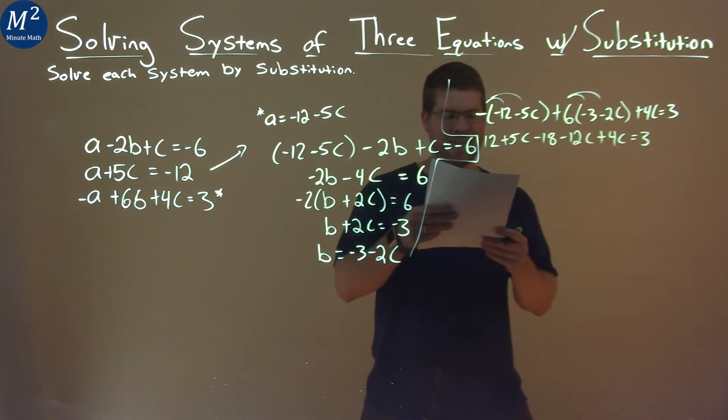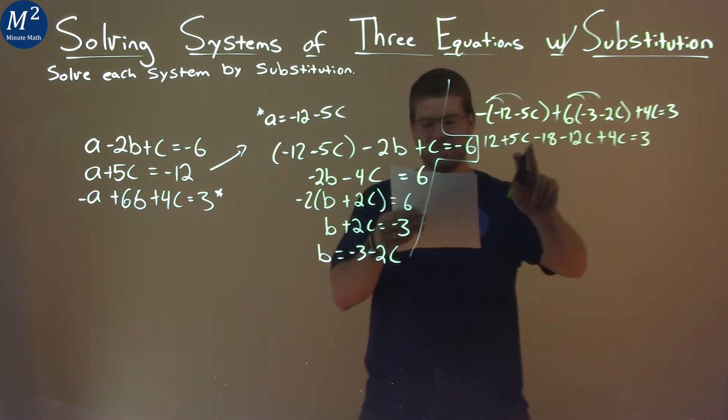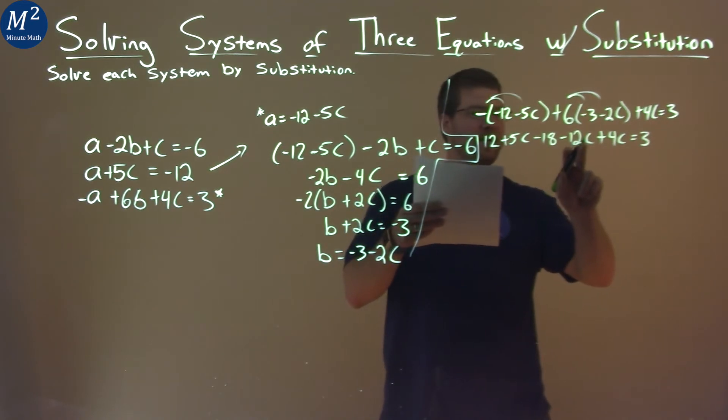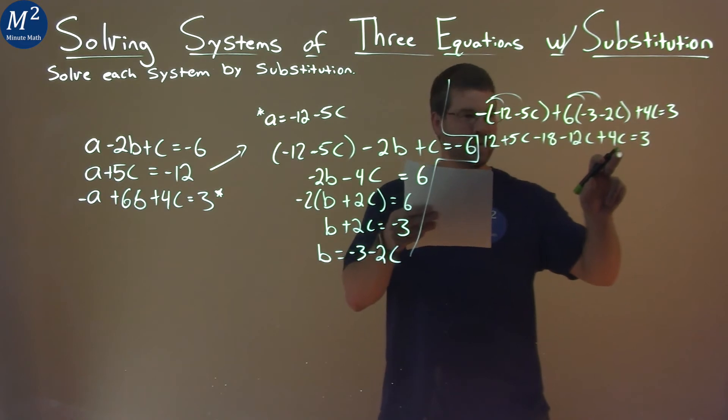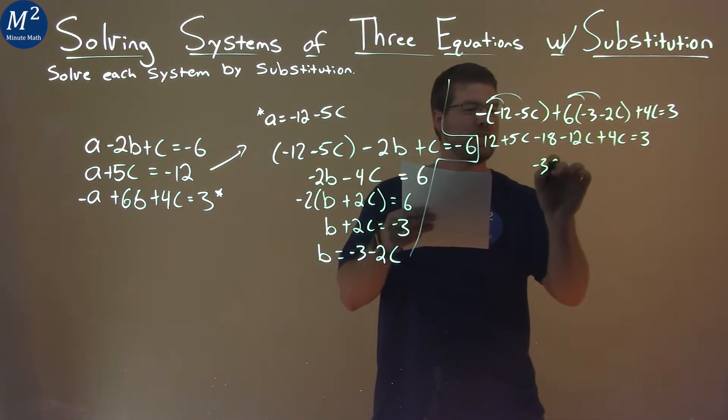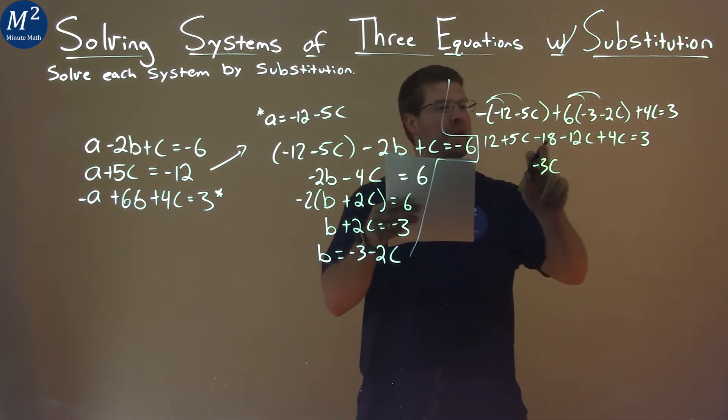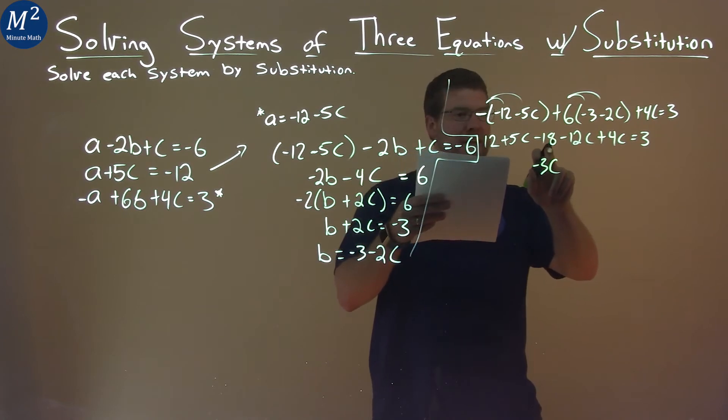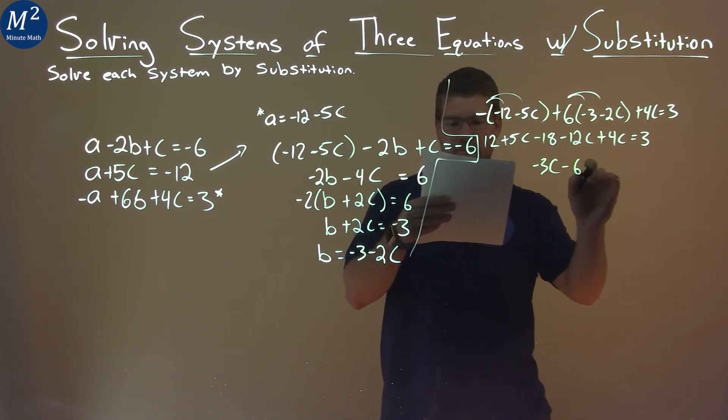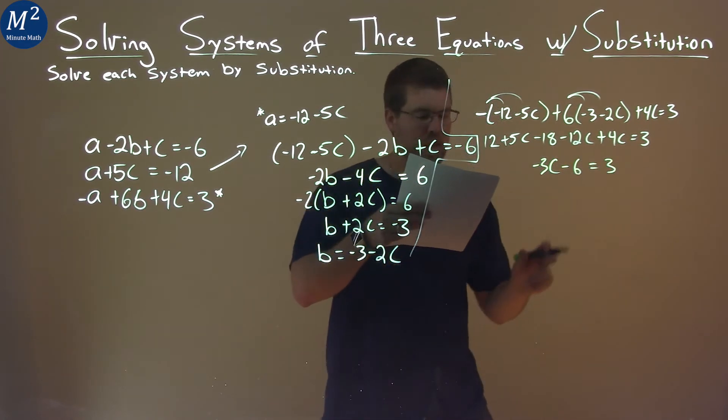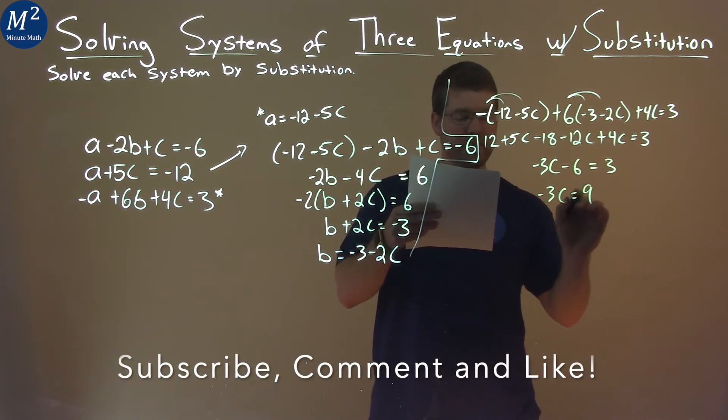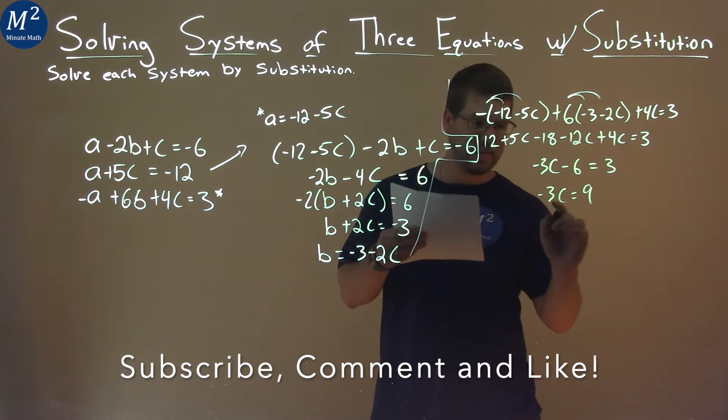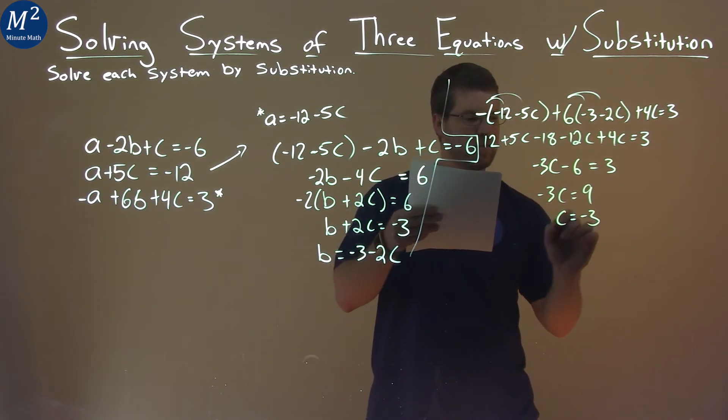All right, so now, let's go combine our like terms. 5C and negative 12C and 4C all combine here to be negative 3C. 12 and negative 18 add together to be minus 6, and that's equal to positive 3. Add 6 to both sides. We have negative 3C equals 9, divide both sides by negative 3, and C equals negative 3.